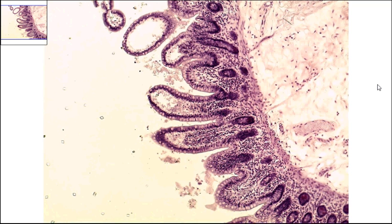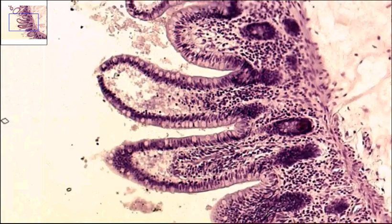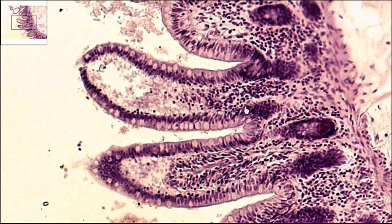If you want to zoom in, we can see a little more detail to these pieces right here, which are the simple columnar. Right where the mouse is tracing, this layer is the simple columnar epithelium.